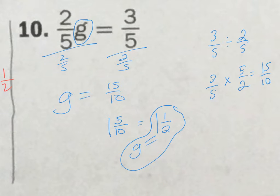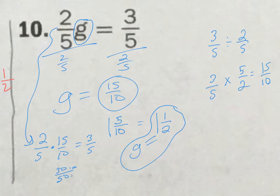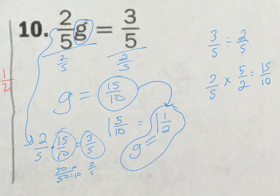Let's go back to 15 tenths to check. 2 fifths times 15 tenths should give me 3 fifths. 2 times 15 is 30, 5 times 10 is 50 — divide each side by 10, and that gets me 3 fifths, which is what I want. So 15 tenths is correct, and when I put that into a mixed number it's 1 and 1 half. Everything checks out. Lots of steps and lots of work, but it's worth it because you get the right answer.